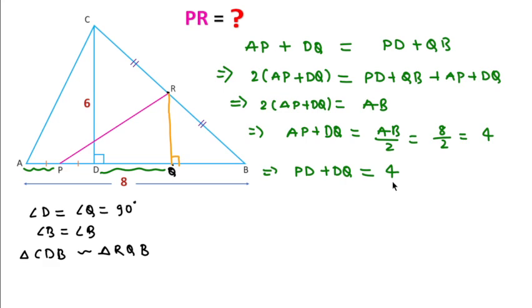By the basic proportionality theorem, we can write QR = 1/2 × CD, because RQ and CD are parallel. The CD length is 6, so QR will be 3 units.